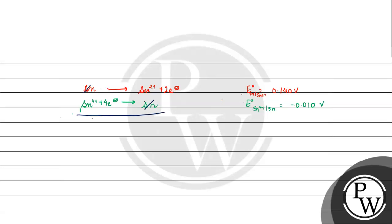Now, Sn⁴⁺ + 2 electrons gives Sn²⁺. We cannot directly add or subtract E° values, so we use an extensive property, which is ΔG. ΔG₁ = -n·F·E° = -(2)·F·(0.140 V). ΔG₂ = -(4)·F·(-0.010 V).